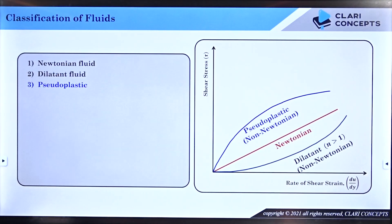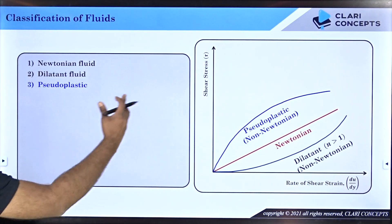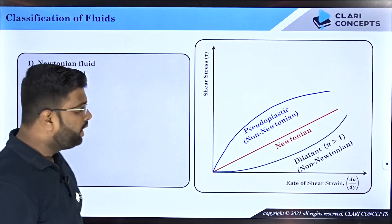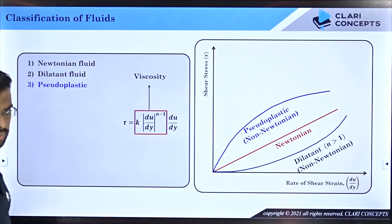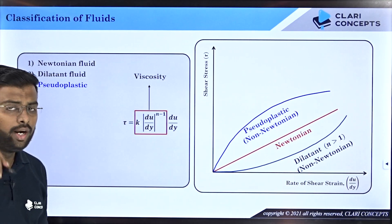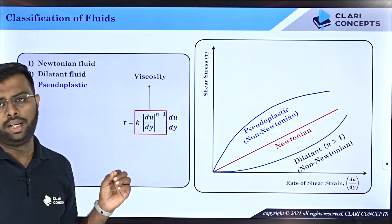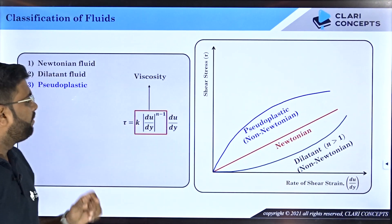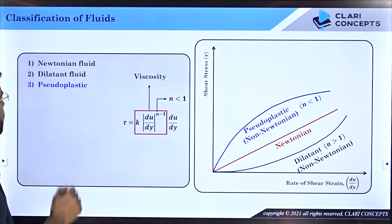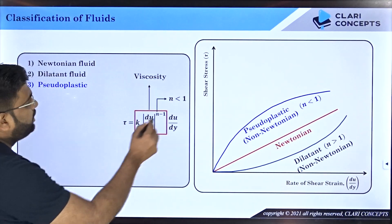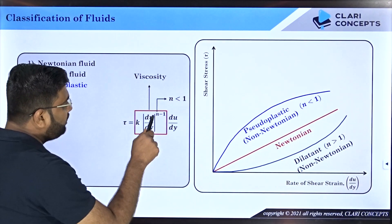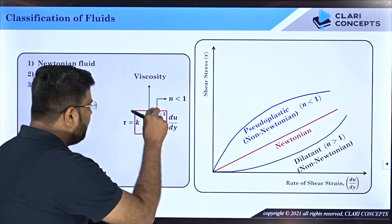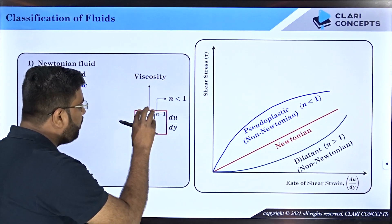The relationship between shear stress and rate of shear strain is the same form τ = k(du/dy)^n, but the key difference is the value of n. For pseudo plastic fluids, n is less than 1, whereas for dilatant fluids n was greater than 1.